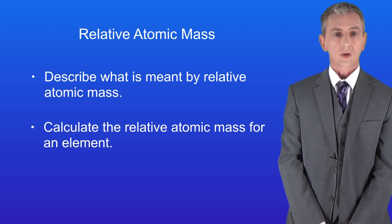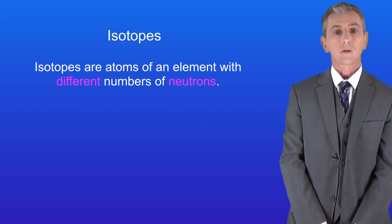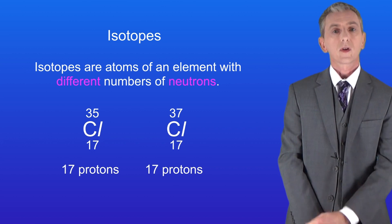In a previous video we looked at isotopes. Remember that isotopes are atoms of an element containing different numbers of neutrons. I'm showing you here the isotopes for the element chlorine.